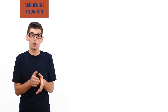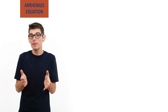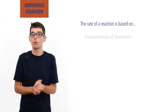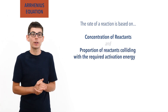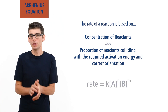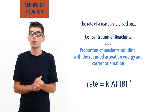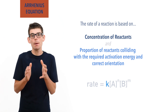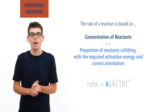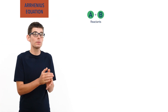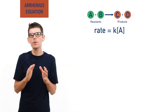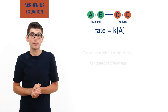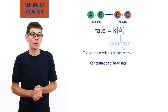Only particles that have the required activation energy and collide with the correct orientation at any one moment — in a rate equation, this proportion of particles is represented using a rate constant k. At a specific temperature it will always be the same. For example, let's imagine a reaction A plus B forms C plus D and has a rate equation of rate equals rate constant k multiplied by concentration of A. We know the rate of a reaction is determined by the concentration of reactants, and this is why concentration of A is in the rate equation.